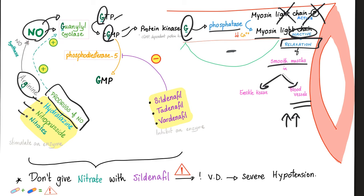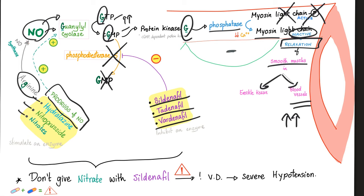Another way: inhibit phosphodiesterase 5, which inhibits the conversion of cyclic GMP into GMP. This increases cyclic GMP to relax blood vessels and erectile tissue. The drugs are sildenafil, tadalafil, and vardenafil. Should you combine nitrates with sildenafil? Absolutely not — both have the same function, so combining them leads to severe vasodilation and a severe drop in blood pressure. You can die of hypotension. Never combine nitrates with sildenafil (Viagra).